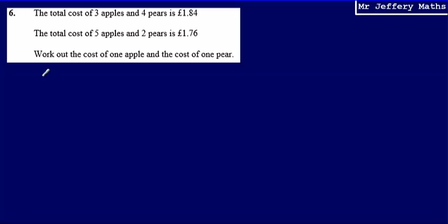This is question six from a series of videos taking a look at the Edexcel practice papers. Here we're told that the total cost of three apples and four pears is £1.84. We're told that the total cost of five apples and two pears is £1.76. And we're asked to work out the cost of one apple and the cost of one pear.